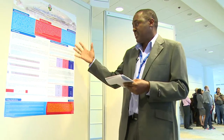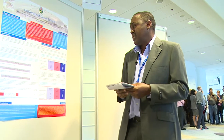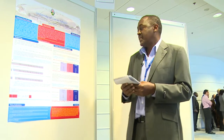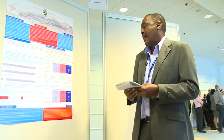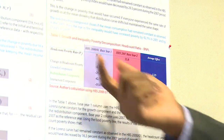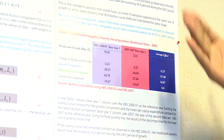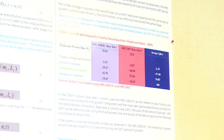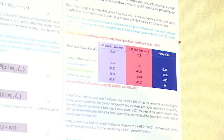For this particular poster, we concentrated only on the first measure of poverty — the headcount poverty — and we decomposed the change in headcount poverty using first the basic needs poverty line, which is a bit higher than the food poverty line.